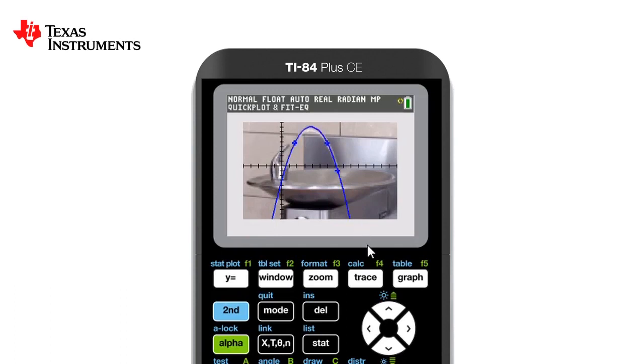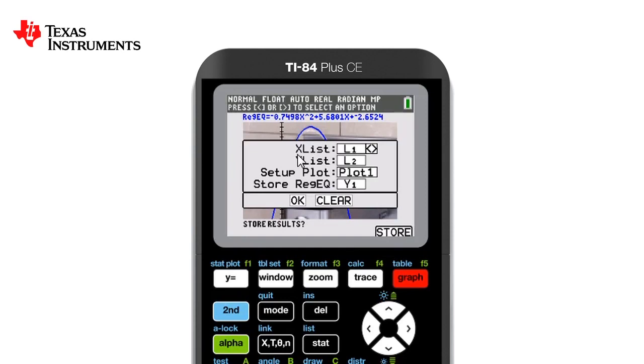F5 again asks us to store this. By pressing graph, we can store the x values in list 1, the y values in list 2. The plot will get stored in plot 1, and the regression equation will get stored in y1. We arrow down until we get to the OK button and press enter.